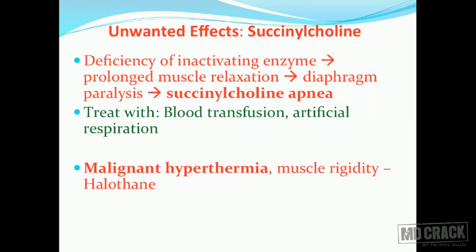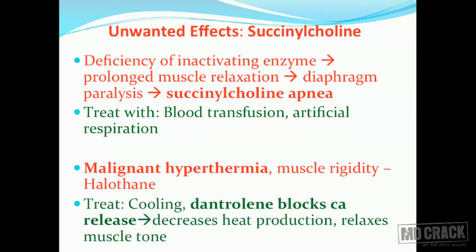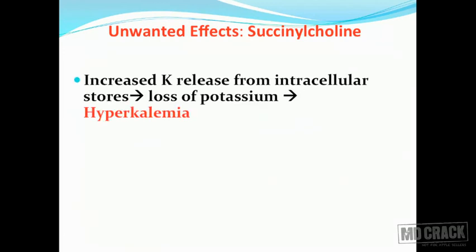The second unwanted effect of succinylcholine is malignant hyperthermia and muscle rigidity. This is also produced by halothane. So halothane and succinylcholine together could increase the chances of malignant hyperthermia. To treat malignant hyperthermia, you need external cooling and you need dantrolene, which is a directly acting skeletal muscle relaxant. It blocks calcium release from the sarcoplasmic reticulum, decreases heat production, and relaxes muscle tone. After succinylcholine apnea, malignant hyperthermia is the second adverse effect of succinylcholine.